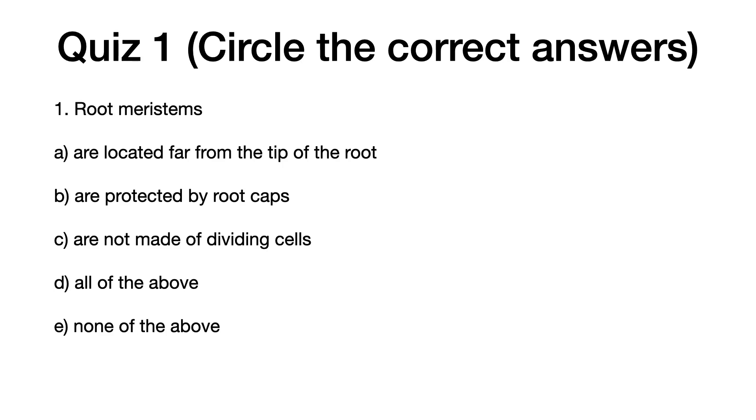Question one: Root meristems are a) located far from the tip of the root, b) are protected by root caps, c) are not made of dividing cells, d) all of the above, or e) none of the above.